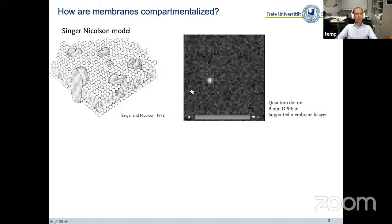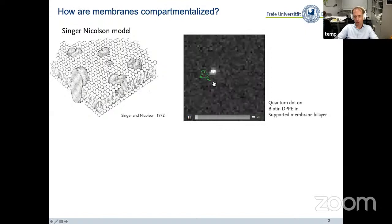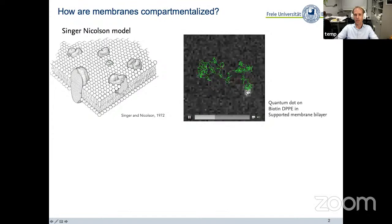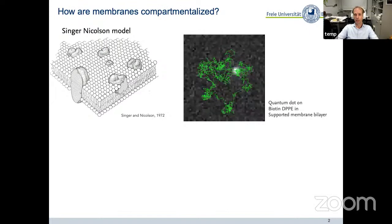Where we come from is we want to understand how membranes are compartmentalized. All of you are obviously familiar with the Singer-Nicholson model from 1972, where Singer and Nicholson synthesized a number of recent observations on what plasma membranes may be made of and consist of and how they may be assembled from lipids and proteins into these fluid and continuous bilayers. A membrane protein would be embedded in a mosaic of lipids and proteins in which these molecules are free to move. As an illustration, I brought to you here a quantum dot that is bound to a lipid in a supported membrane bilayer. You can see that this molecule here is absolutely free to move and just wiggles around in a random motion through this membrane bilayer. It's diffusing.